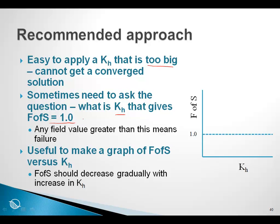When kh is 0, under static condition, there might be a factor of safety. Then you apply a small kh and you get a lower factor of safety. Then you apply a little bit of a bigger kh and you'll get a lower factor of safety. Eventually, you get a kh that gives you a factor of safety less than 1. Then you determine what is the kh that gives you a factor of safety of 1.